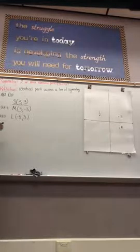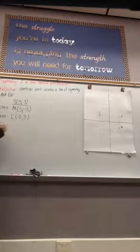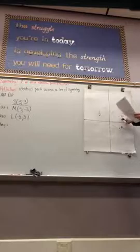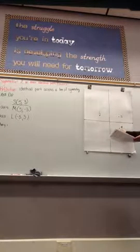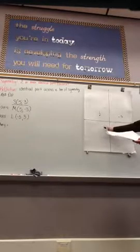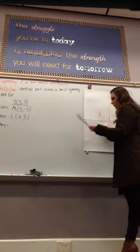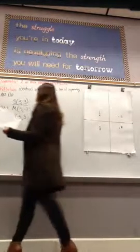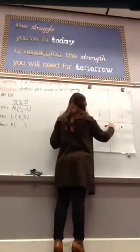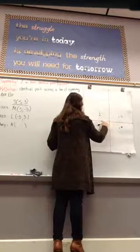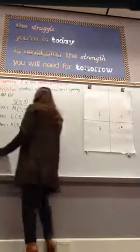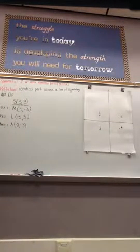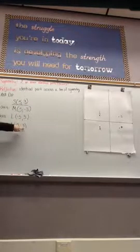Go on down to the third box: reflect across the x-axis, then the y-axis. We go back to point S, our given point. Reflect it across the x-axis, which gives us point M. Now reflect M across the y-axis: 1, 2, 3, 4, 5 units over, 1, 2, 3, 4, 5. That point is labeled A. A's coordinates: going left on the x-axis — negative 5 — then down — negative 3. So A is at (-5, -3). When reflecting across both axes, x-coordinates are opposite and y-coordinates are opposite.